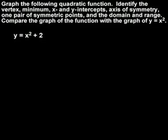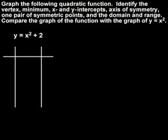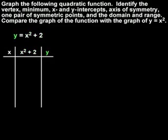First, we're asked to graph the function y equals x squared plus 2. To graph the function, let's start by setting up a table of ordered pairs, with the x values in the left column, x squared plus 2 in the middle column, and the y values in the right column.